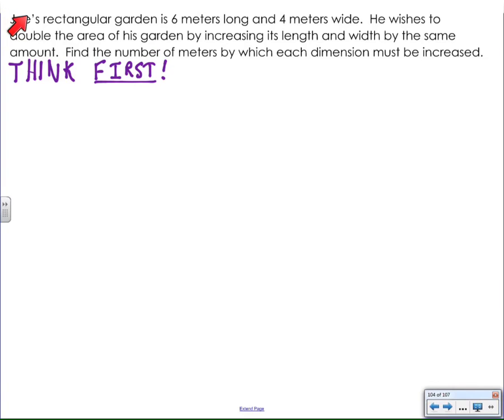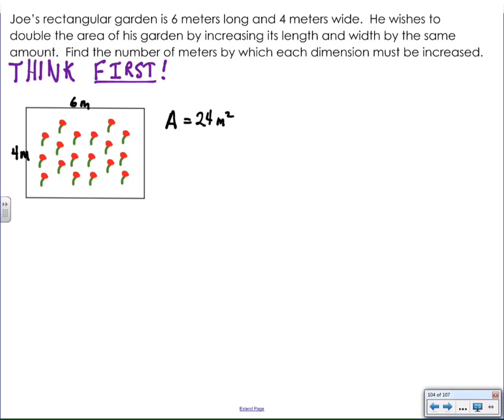So here's Joe. Joe has a rectangular garden, six meters long and four meters wide. So I'm not even going to read the question entirely. I am going to simply draw a garden for Joe. Luckily, I had copy and paste, so it didn't take me long to draw these plants. What I know is Joe's garden is 24 square meters in size and there's a bunch of pretty red flowers in it.